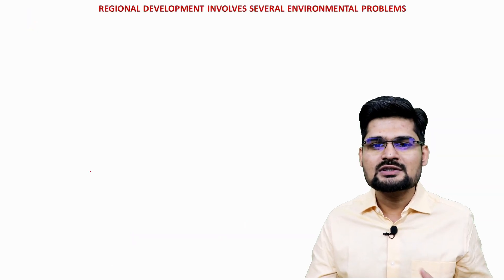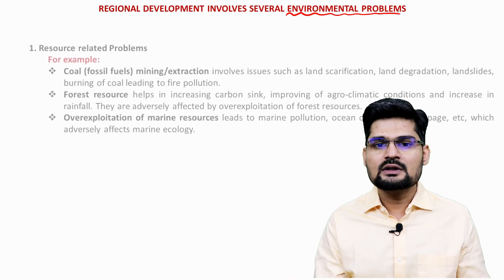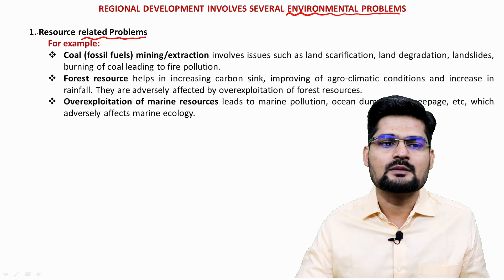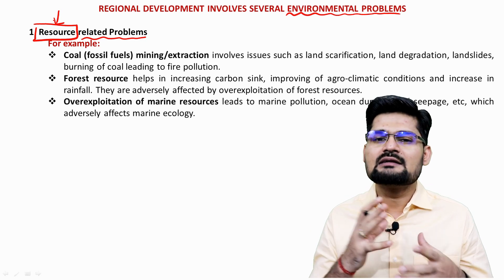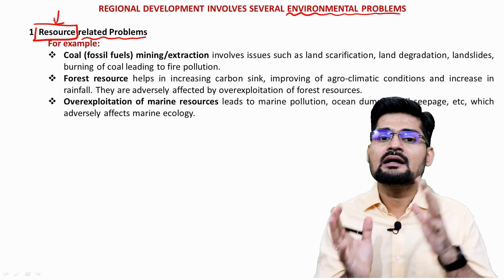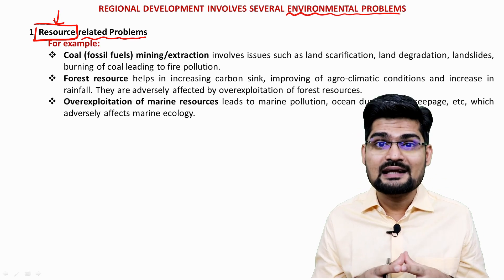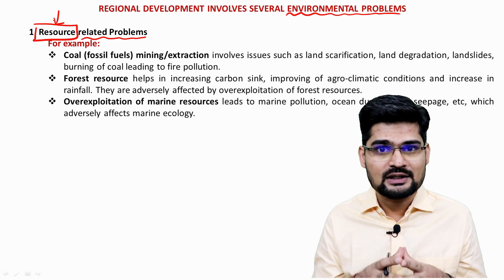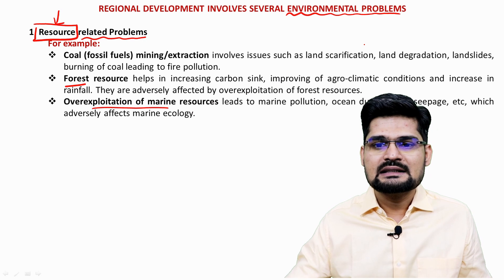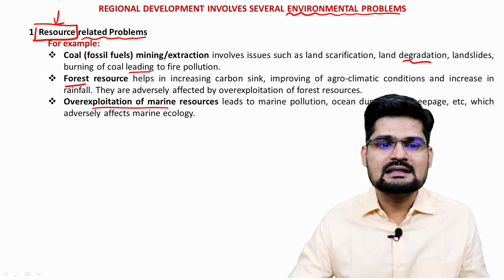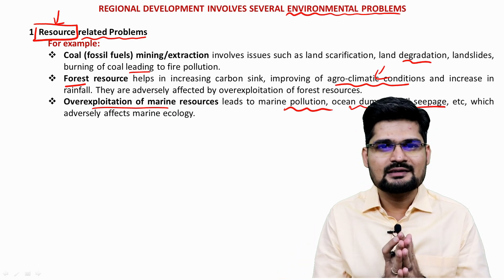Regional planning and development involves several environmental problems. The first is resource-related problems. The entire economic and resource geography shows that world development is concentrated around resource concentration. Weber's industrial location theory discusses factors of production. Over-exploitation of coal, forest, and marine resources leads to land degradation, landslides, agro-climatic condition changes, marine pollution, ocean dumping, and oil seepage.